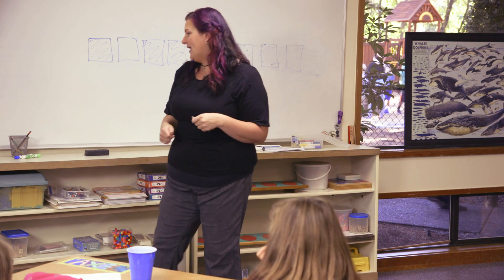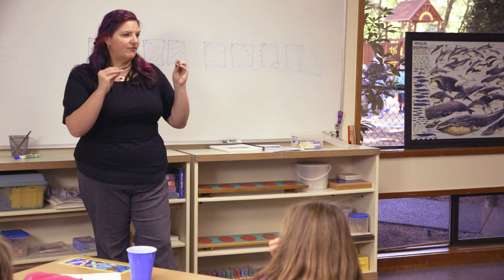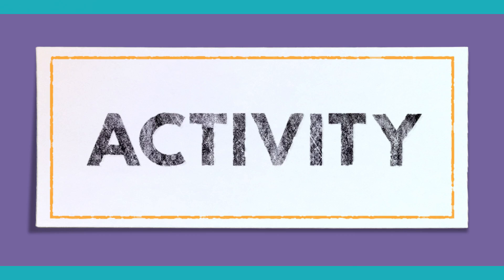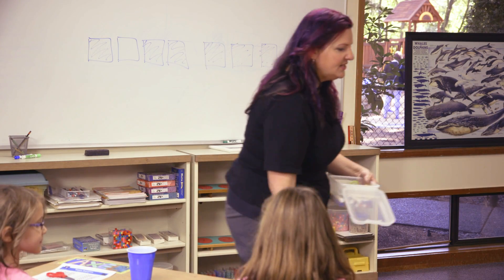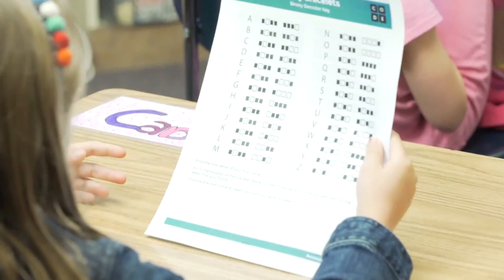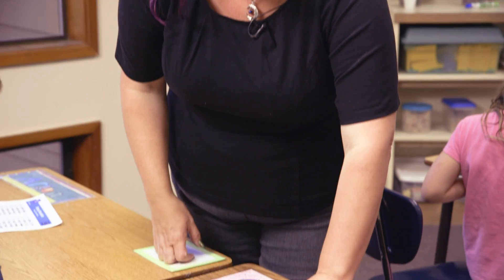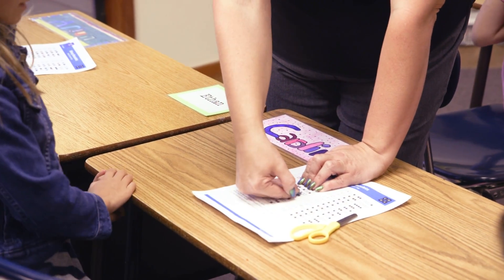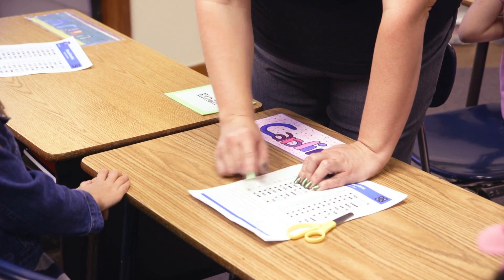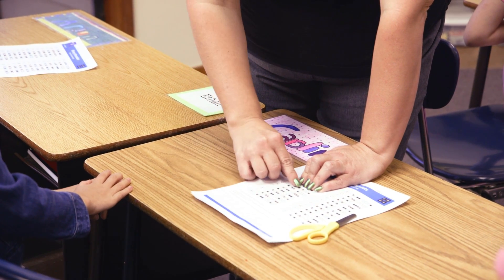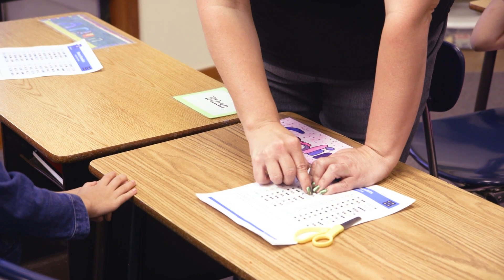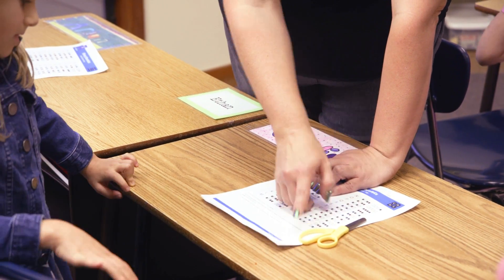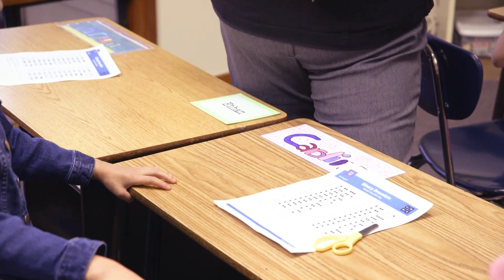So now we all have our binary bracelets. We're going to fill them in to look like the first letter of our first name. Then you're going to color your bracelet to match the code — color, don't color, color, color, color, don't color, color, color — and then color, don't color, don't color, color. And then you're going to store your initial on the bracelet.